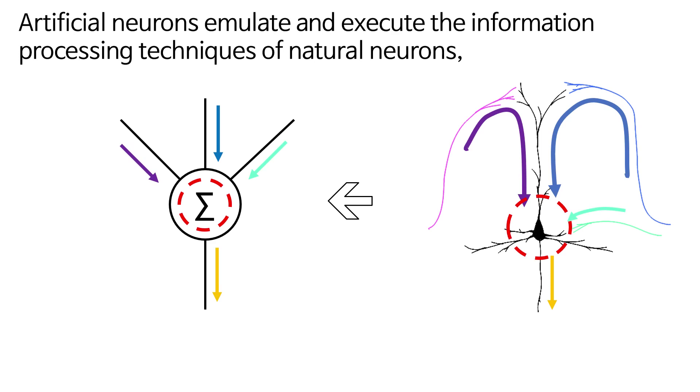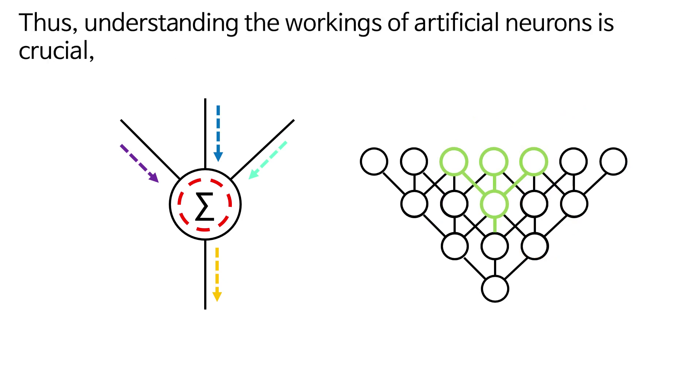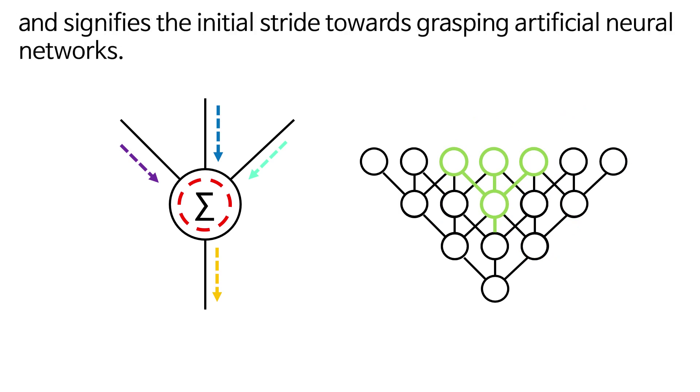Artificial neurons emulate and execute the information processing techniques of natural neurons, and when grouped together, they form an artificial neural network. Thus, understanding the workings of artificial neurons is crucial and signifies the initial stride towards grasping artificial neural networks.